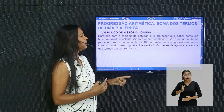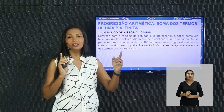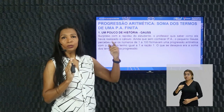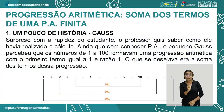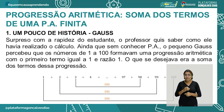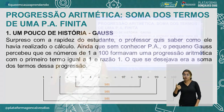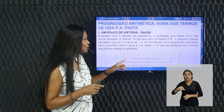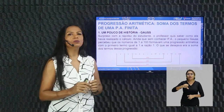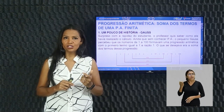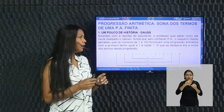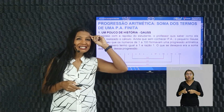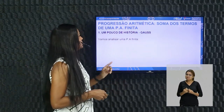O que Gauss percebeu? Ele percebeu a regularidade: 1 mais 100 deu 101; 2 mais 99, 101 também; 3 mais 98, 101 também. Lembra que em aulas anteriores falamos de termos equidistantes? A soma dos extremos é igual à soma dos termos equidistantes aos extremos. Foi essa sacada, o pensamento fantástico que Gauss teve.